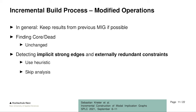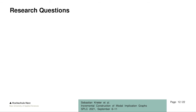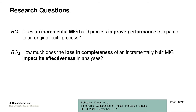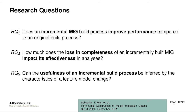We evaluated both of these options in our evaluation. Our research questions are: first, does an incremental build process improve performance compared to an original build process? Second, if we trade completeness for speed in an incremental build, does it impact effectiveness — and if yes, by how much? Third, can we give developers a hint on when it's useful to use an incremental process and when it might not be?